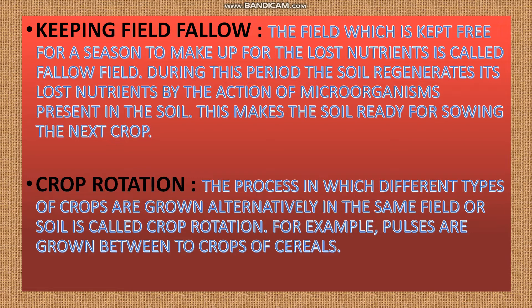For example, pulses are grown between two crops of cereals. In the first season we grow a cereal crop, in the second season we grow pulses, and in the third season we grow cereal again. By growing pulses, the nutrients from the soil will come back.